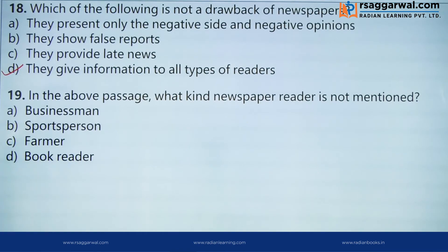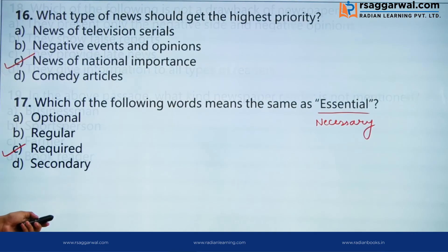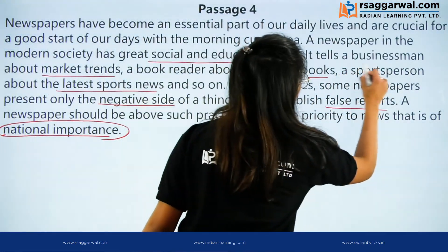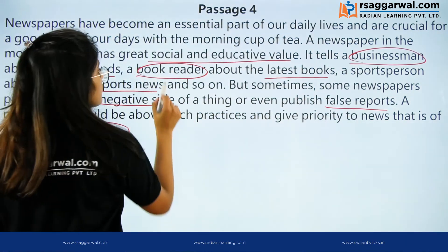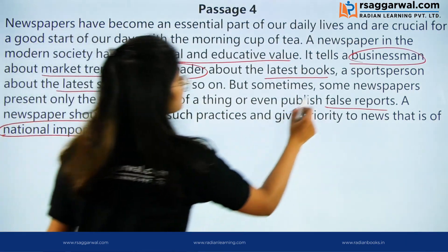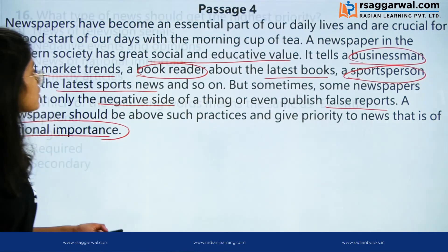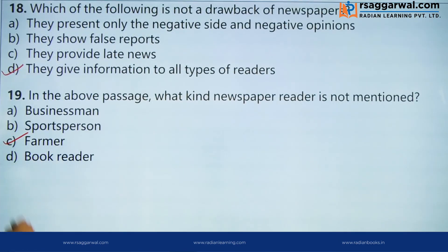Question 4: In the above passage, what kind of newspaper reader is not mentioned? Humne kin readers ki baat kari hai — businessman, book reader, and sports person. Toh we have not read about farmers. So C — Farmer — is the correct option.